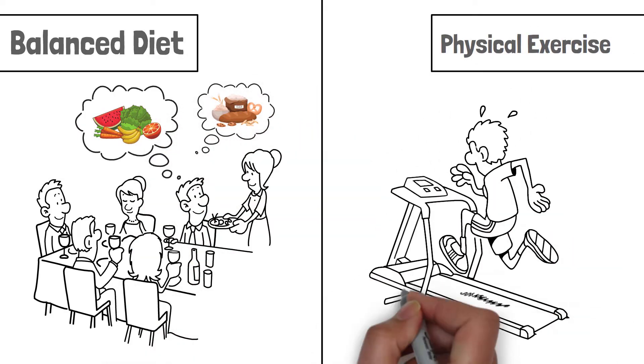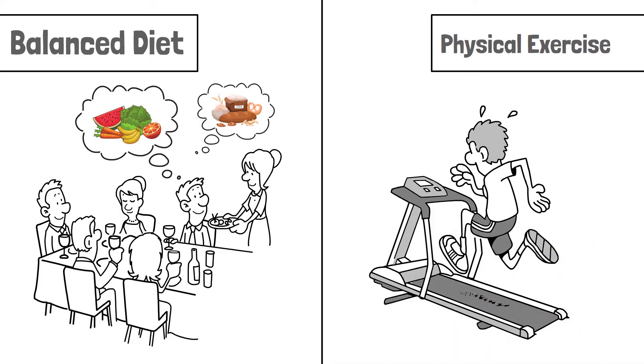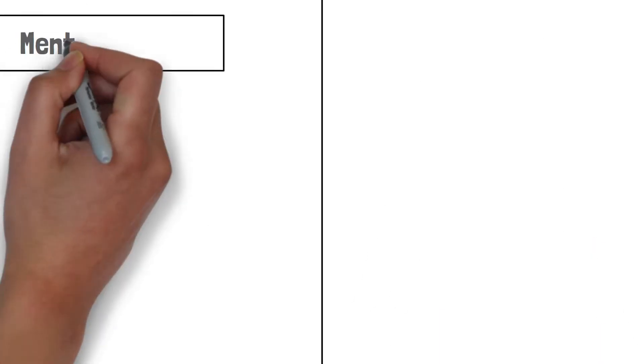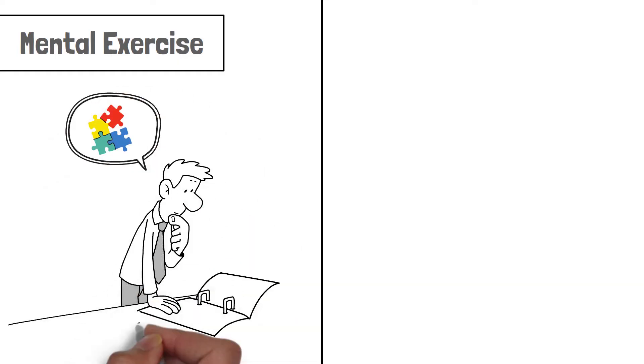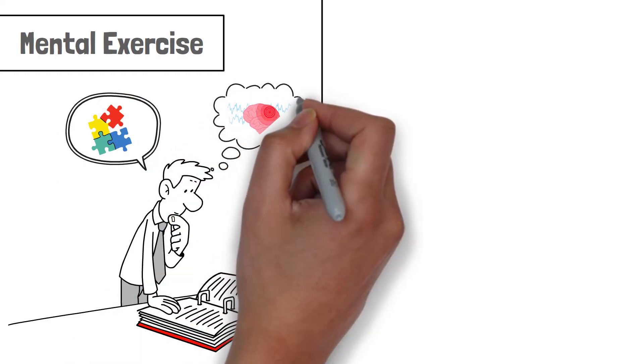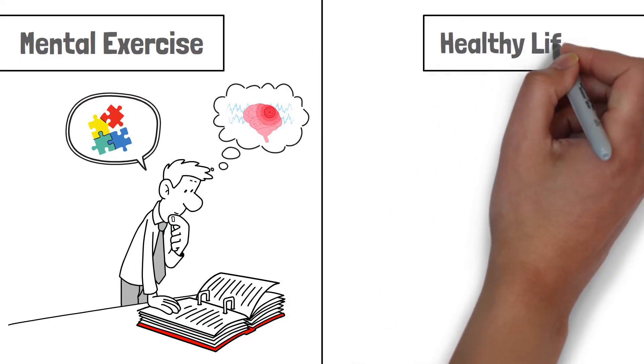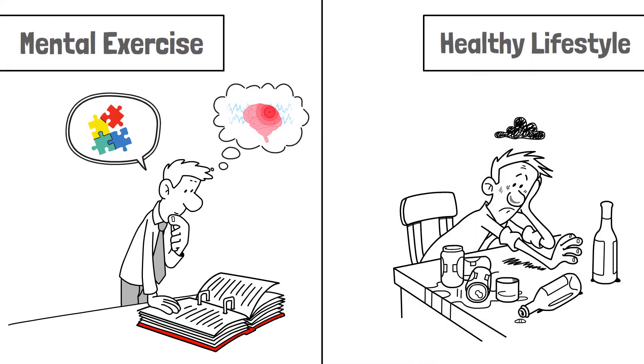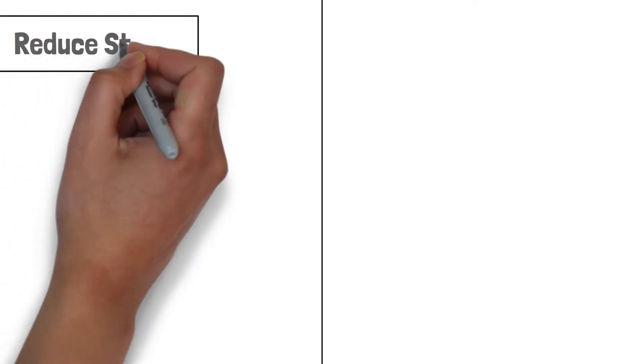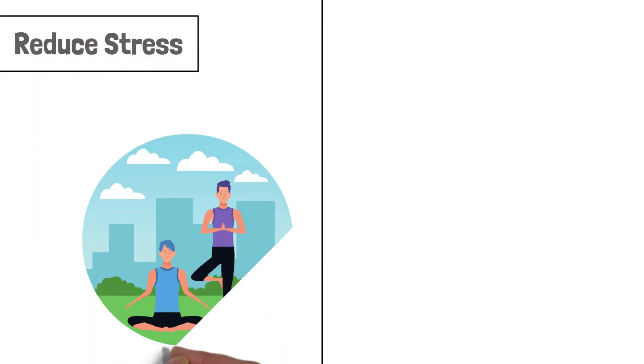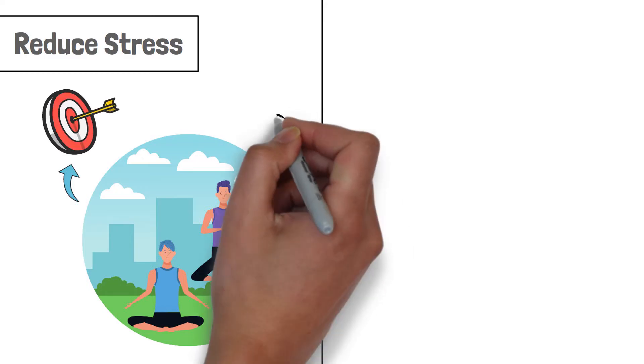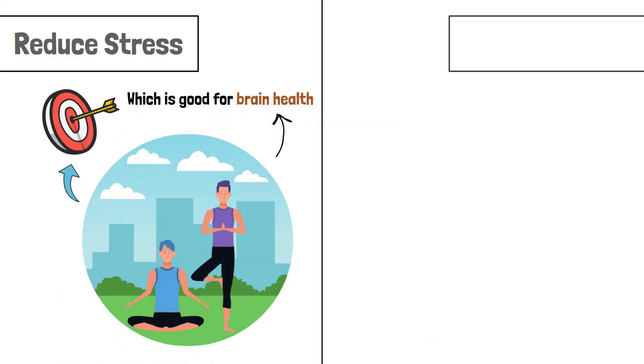Physical exercise. Regular exercise or yoga keeps the brain active and healthy. Mental exercise. Solving puzzles, reading books, or learning new hobbies are mental activities that keep the brain sharp. Healthy lifestyle. Stay away from alcohol or drugs and do not smoke. Reduce stress. Activities like meditation, yoga, or dedicating time to your hobbies reduces stress, which is good for brain health.